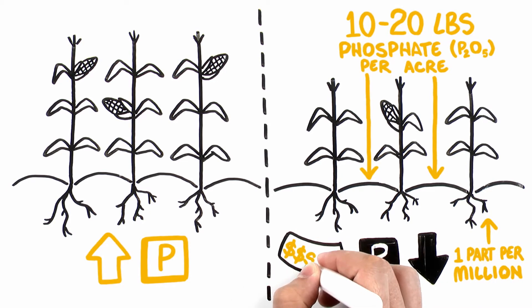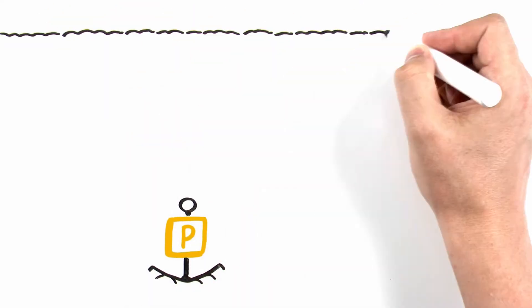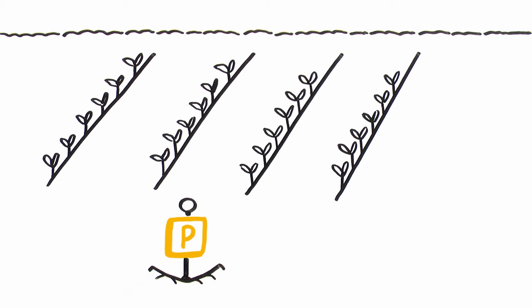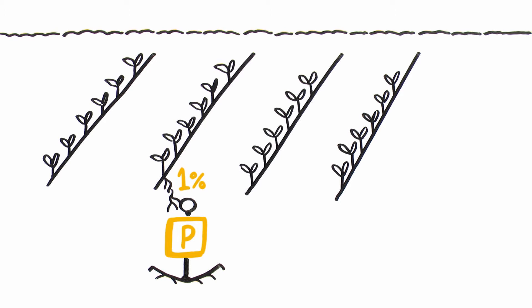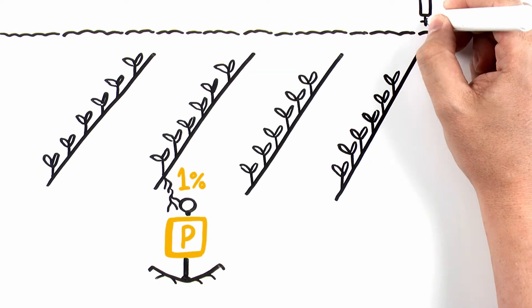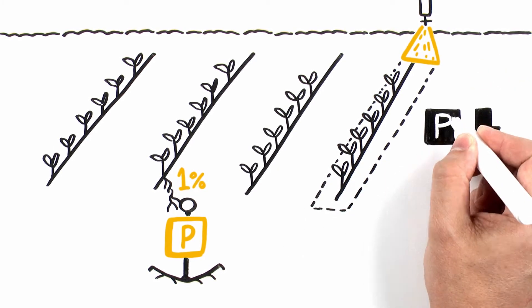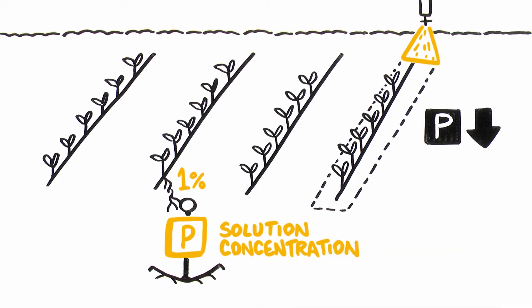Increasing soil test levels can be a costly endeavor. There are ways to make this valuable nutrient more readily available to the plant. Phosphorus is so immobile in soil that it generally moves less than one inch from where it is placed when incorporated. Plant roots only access about 1% of the soil volume, so they have evolved to accelerate root growth in areas higher in phosphorus. This makes band applications of phosphorus an excellent strategy in low testing soils, as banding can greatly increase soil solution concentrations near the band.